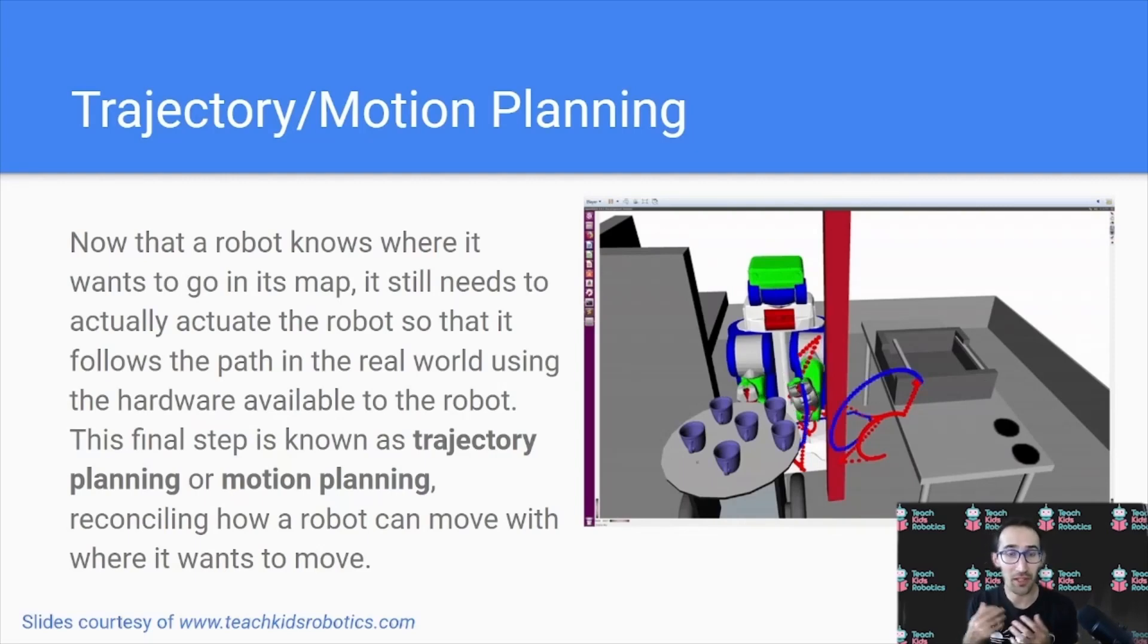The next step, once a robot knows where it is in the map, it's decided it has a start and a goal point, it's found what it considers the best path is from that start to goal point in its map, it actually needs to figure out how it can realize that planned path in the real world using the motors available to it. This final piece is known as trajectory planning or motion planning, and reconciles how a robot is actually able to move with what the plan was for the robot to move. And this allows us to close the gap between the robot's perception of the world and its movement in the real world.